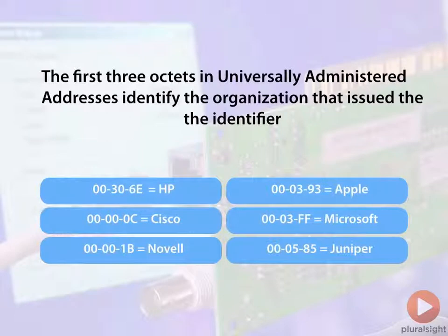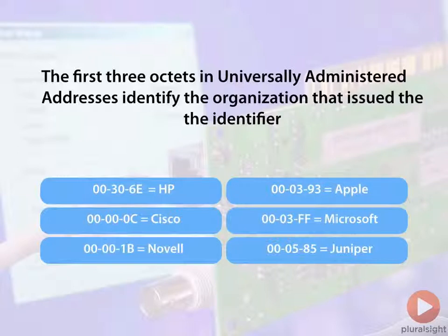The first three octets in a universally administered address identify the organization that was issued this MAC address space. This MAC address space is issued by the IEEE. For example, 00306E is allocated to HP, and 00000C is, of course, allocated to Cisco — a very common prefix to a MAC address that we see.